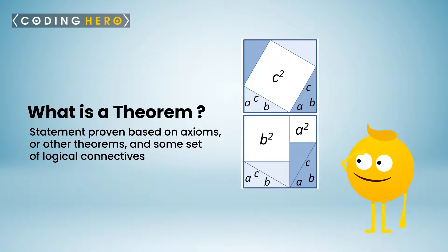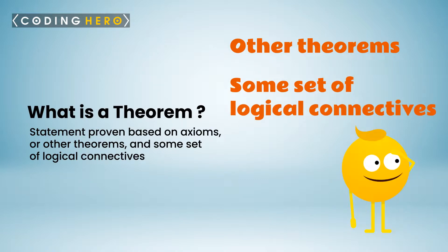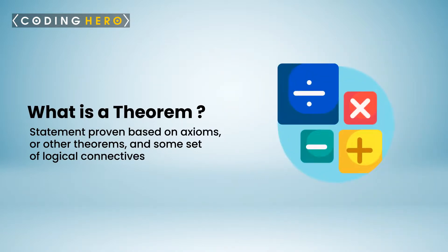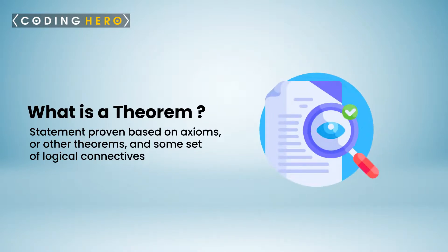What is a theorem? A theorem is a statement proven based on axioms or other theorems and some set of logical connectives. Theorems are often proven through rigorous mathematical and logical reasoning and the process towards the proof will, of course, involve one or more axioms and other statements which are already accepted to be true.